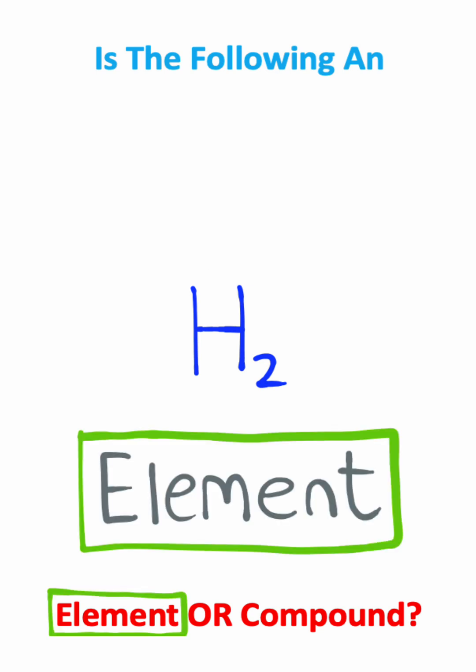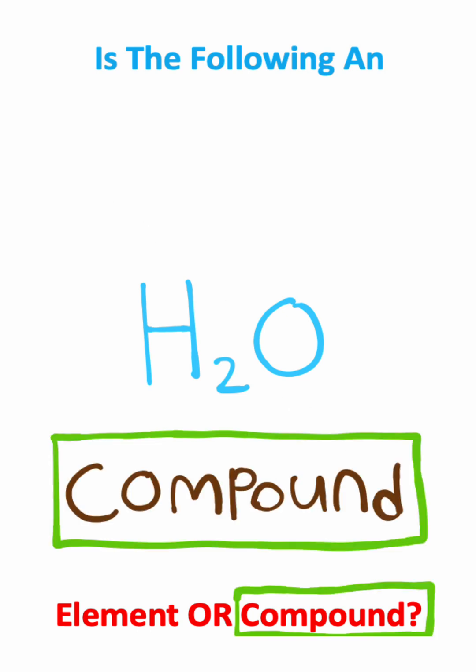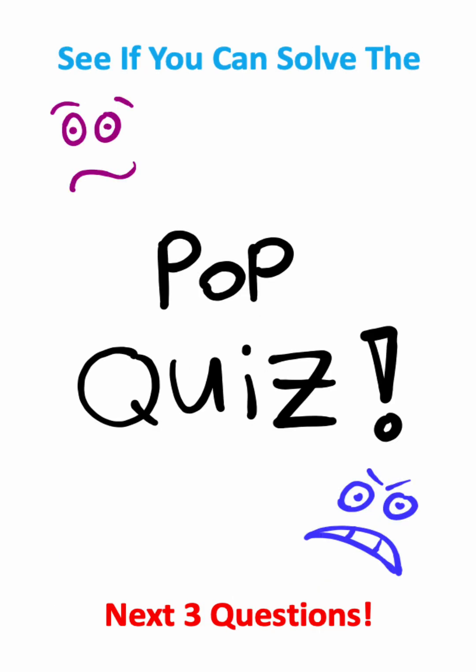But now let's say we have water. Notice how we have hydrogen atoms as well as oxygen atoms. So we could say this is an example of a compound. Now for these next three questions, see if you can figure out the answer before I give it to you.